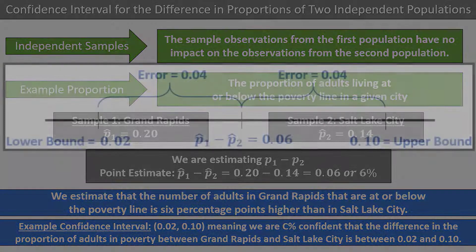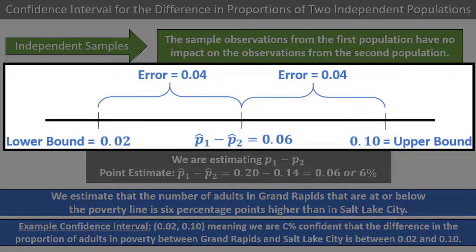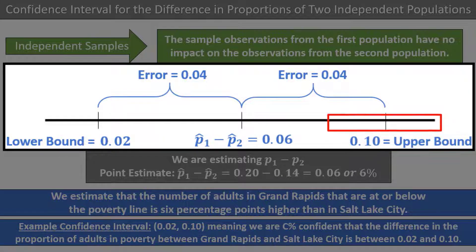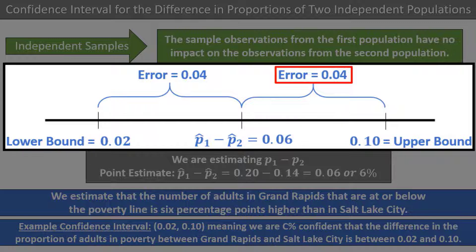On a number line, the confidence interval would look something like this. The point estimate of p-hat1 minus p-hat2 is in the middle, which is 0.06. The lower bound is 0.02 and the upper bound is 0.1, and the margin of error is 0.04 — the distance from the point estimate to either of the bounds of the confidence interval. At this point, I haven't shown you how to calculate the confidence interval, but we will look at how to do that very shortly.